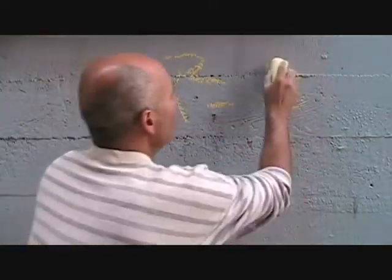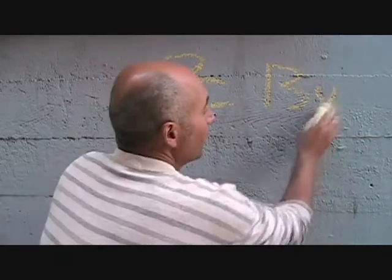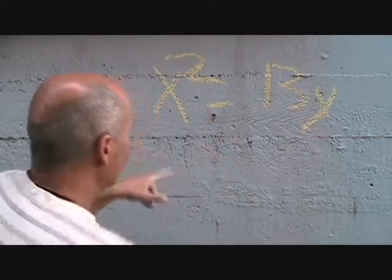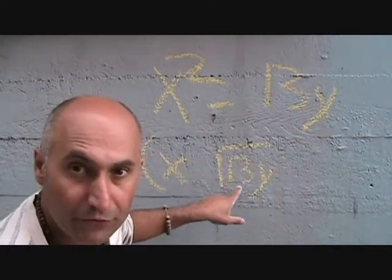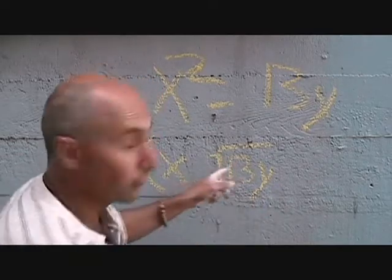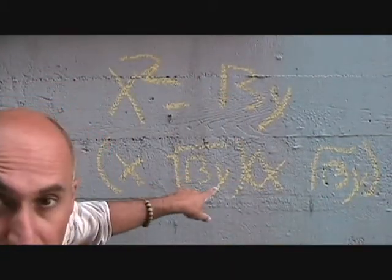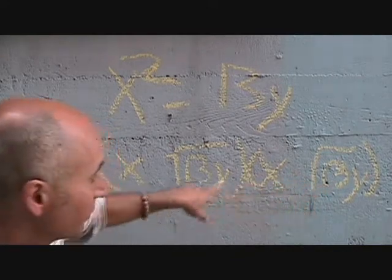Not all expressions you get will factor perfectly — they may not break down cleanly, but you can still factor them. For example, x squared minus 13y. You can still factor this even if 13 is a prime number you can't break up further. You'd write: x minus square root of 13y, times x plus square root of 13y — just going plus/minus with the radical left in place.